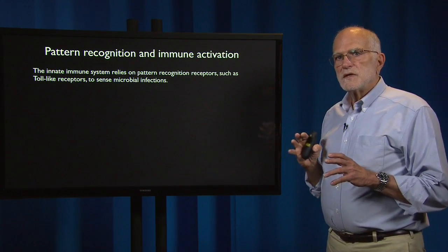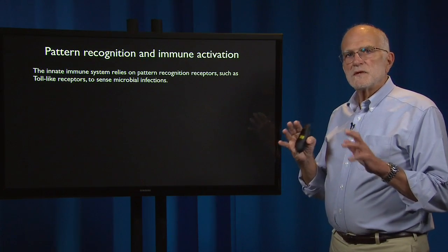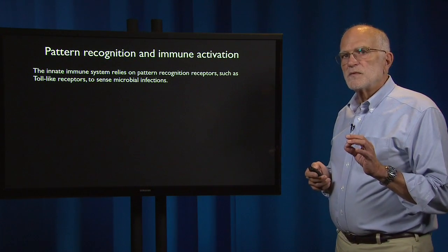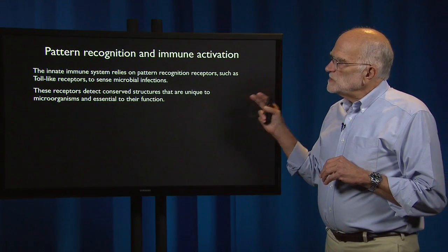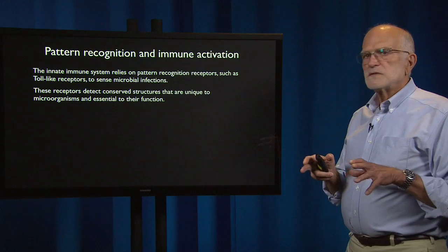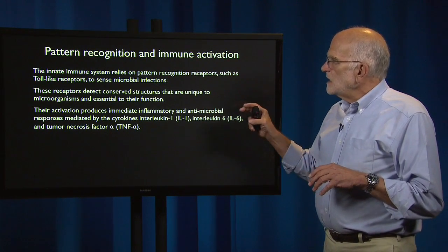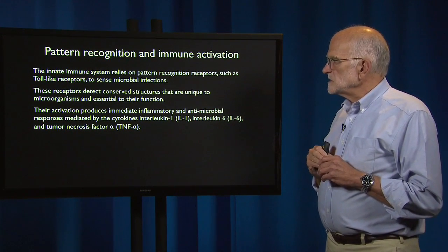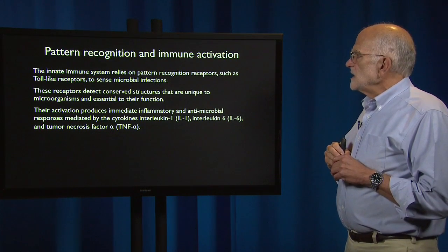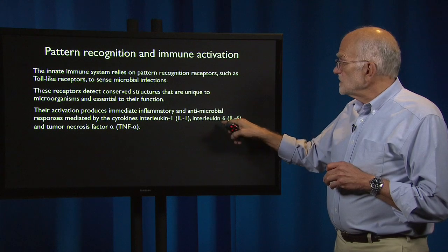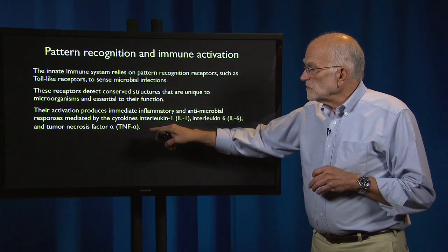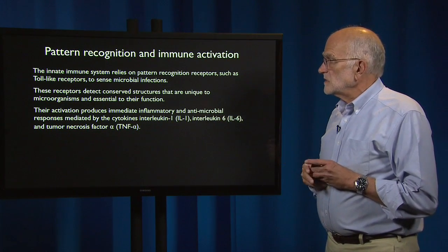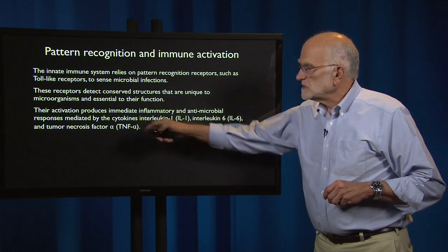The innate immune system relies on recognizing patterns, and it uses receptors to do that. It has pattern recognition receptors like the toll-like receptors that sense microbial infection. These receptors detect conserved structures that are unique to microorganisms and essential to their function. Activating these receptors produces an immediate inflammatory and antimicrobial response mediated by cytokines — specifically interleukin-1 (IL-1), interleukin-6 (IL-6), and tumor necrosis factor alpha (TNF-alpha). These are signaling molecules that communicate between cells, which is why they're called cytokines.